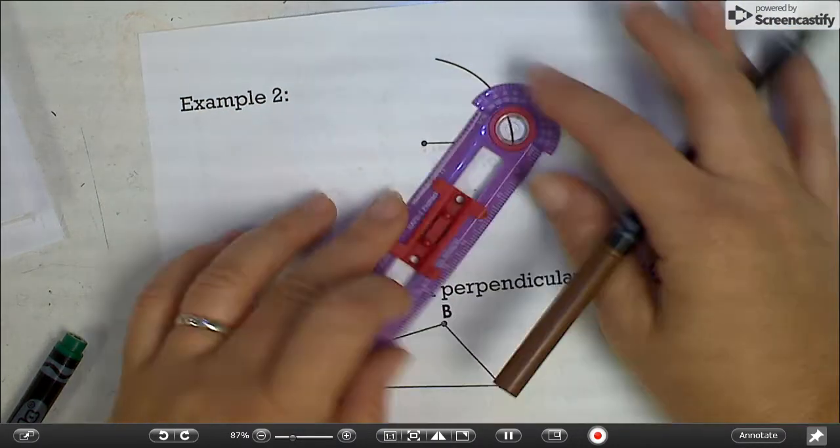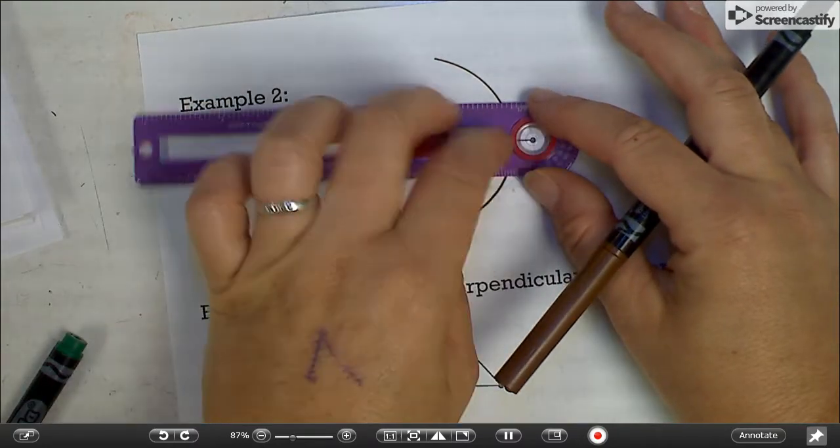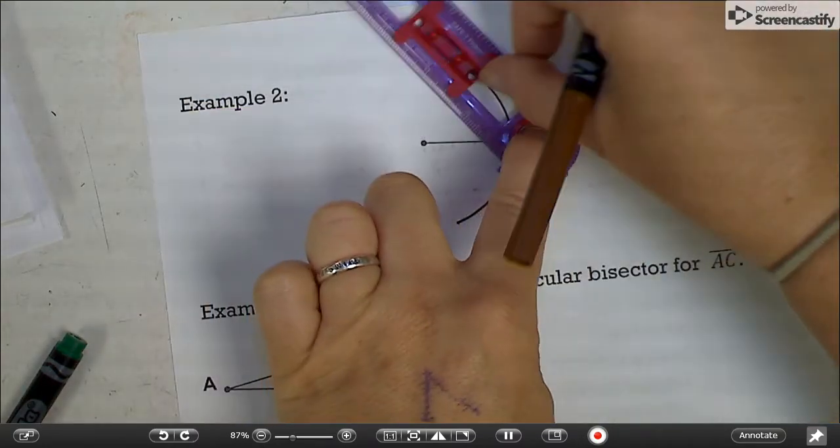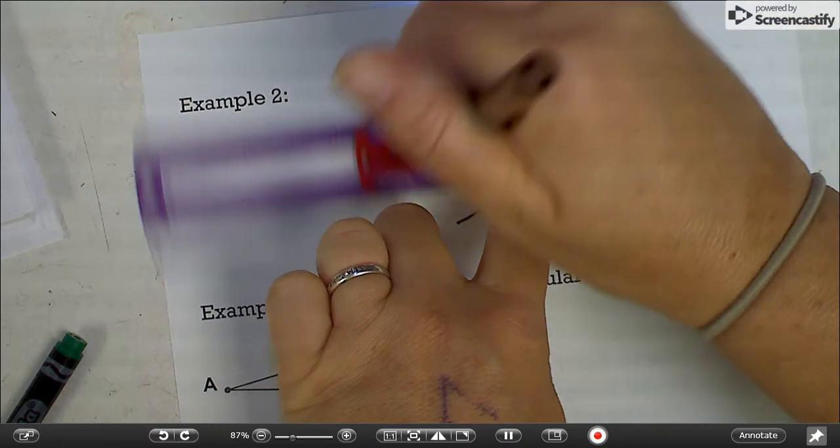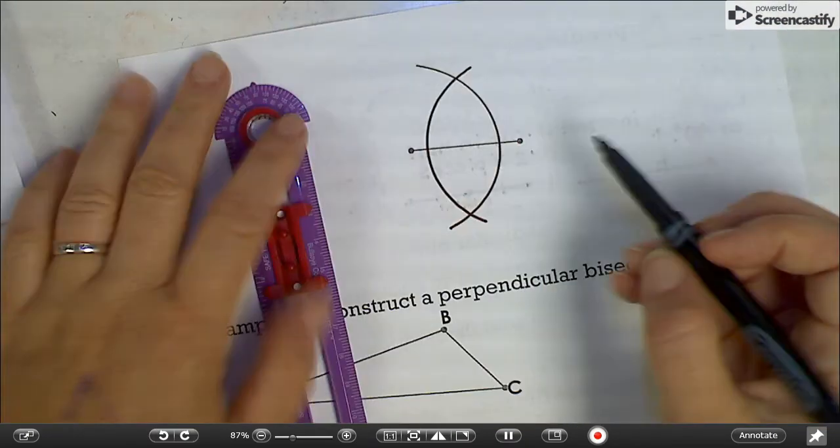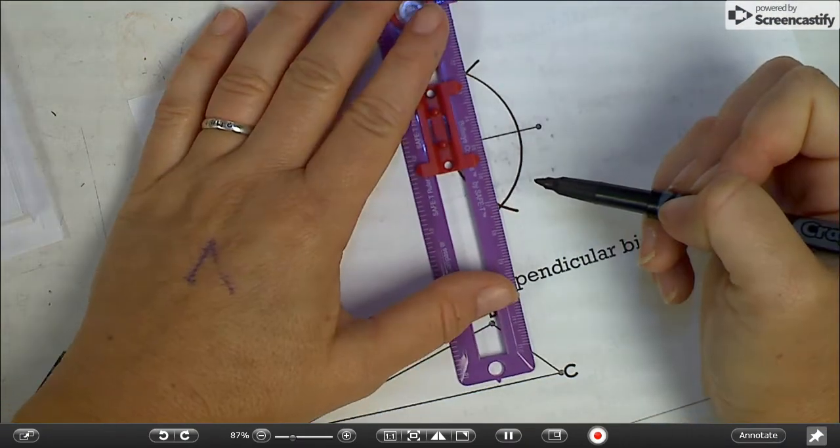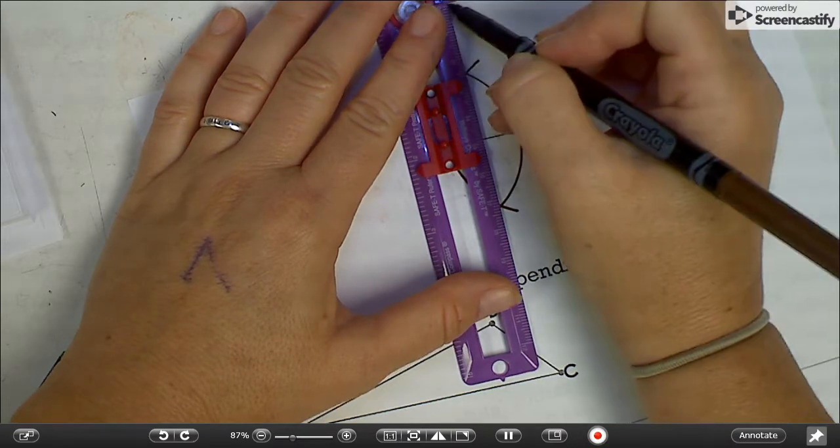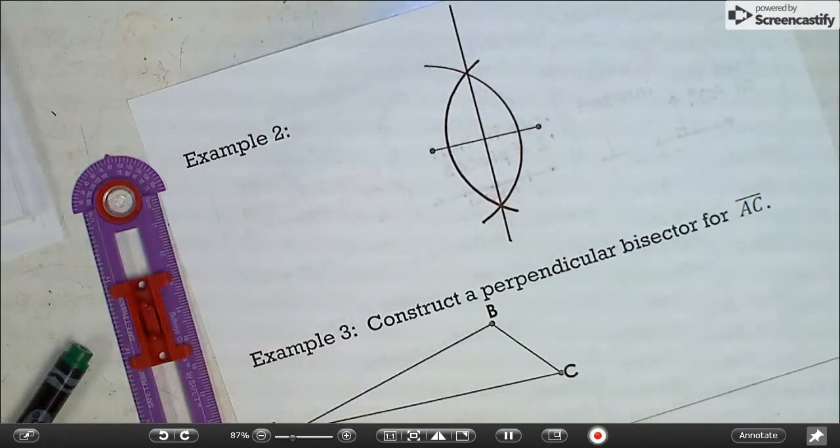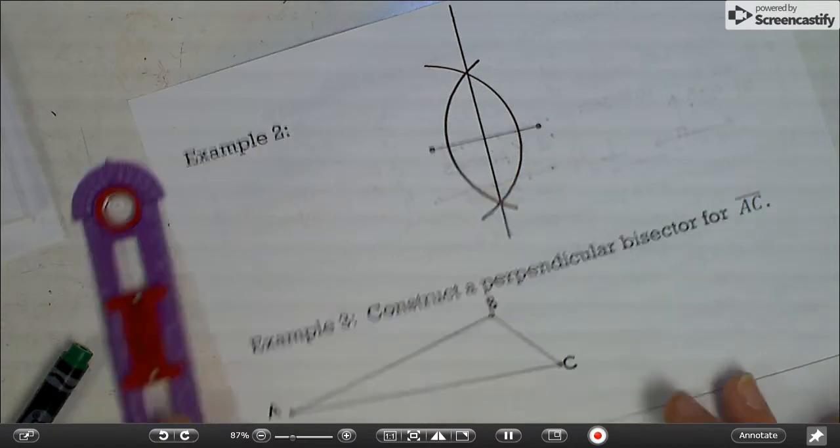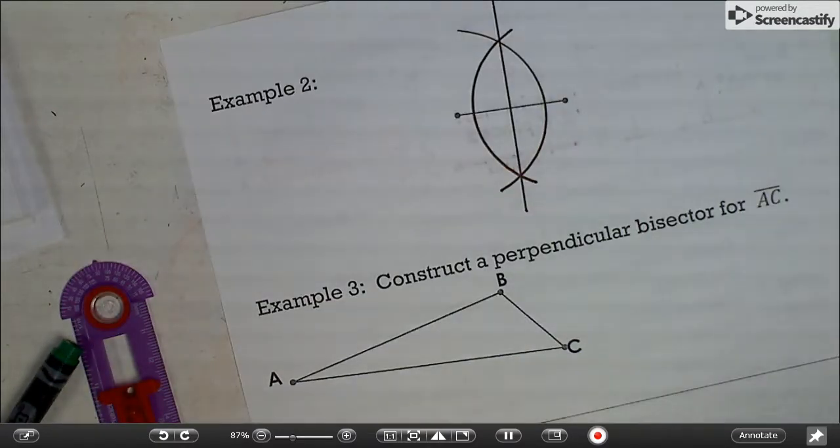Put it on the other end point. Without changing the radius, make an arc. And then you're going to line up those two points and draw your bisector in there. If you need more time, if I'm going too fast, just pause the video after each step and do it that way.